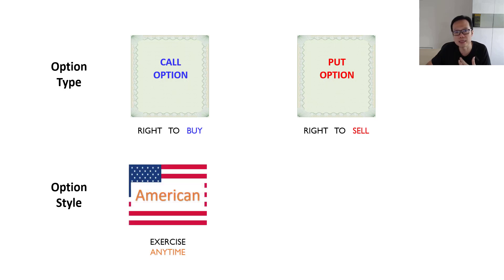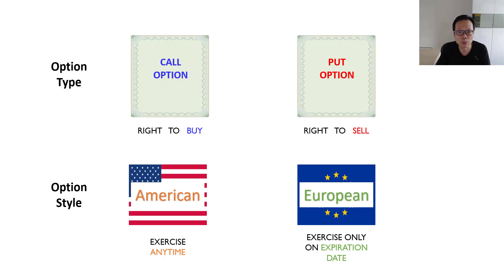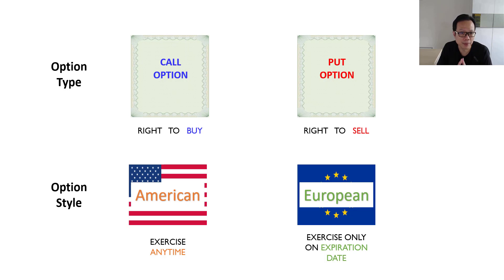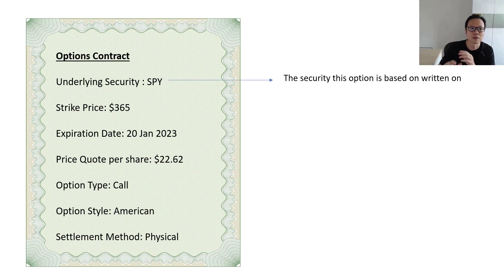In terms of styles, an American style option allows you to exercise the right to buy or sell anytime as long as the option has not expired, while a European option is more restrictive and only allows you to exercise the right to buy or sell on the expiration date itself. Options on US stocks and ETFs are typically American options, while those on indices such as the S&P 500 and index futures are European options.